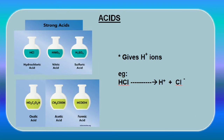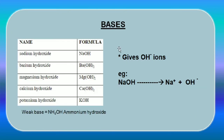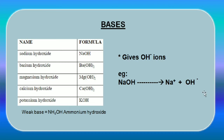Next, about bases. Bases on dissociation give OH- ions. Usually the name of a base ends with the suffix 'hydroxide.' Examples of bases are sodium hydroxide, barium hydroxide, magnesium hydroxide, calcium hydroxide, and potassium hydroxide. All these bases have OH ions in their structure. An example of a weak base is ammonium hydroxide. Whatever the base, when we dissociate it, we get OH- ions — whereas in acids we get H+ ions.